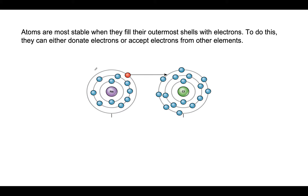It's actually easier for sodium — the path of least resistance to reach a stable state — to just let go of that one electron. When sodium lets go of it, its outer shell becomes complete. As for chlorine, it has seven electrons in its outer shell.